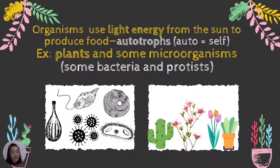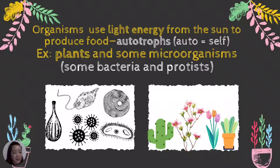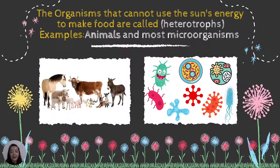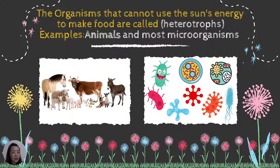Autotrophs are organisms that produce their own food. Examples are plants and some microorganisms such as bacteria and some protists. Now, organisms that cannot use the sun's energy to make food are called heterotrophs.